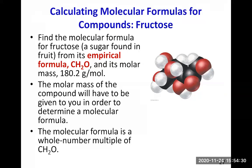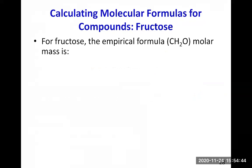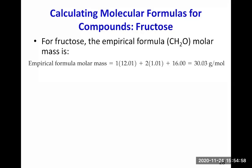The molecular formula is a whole number multiple of CH₂O, so we need to find n. The empirical formula is CH₂O, so we calculate its molar mass: 12.01 times 1 for carbon, plus 1.01 times 2 for hydrogen, plus 16.00 times 1 for oxygen. Adding all of this up gives 30.03 grams per mole — the empirical formula molar mass for fructose.